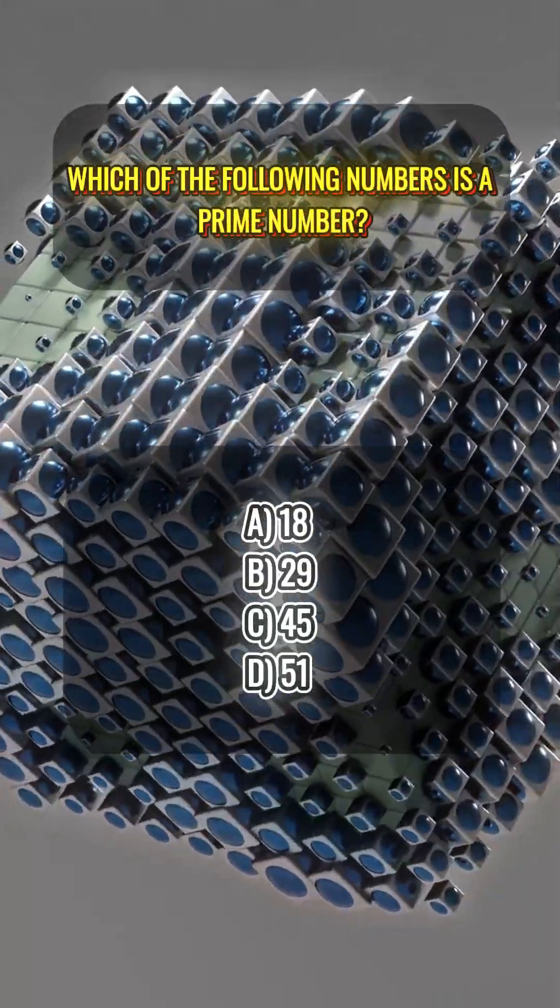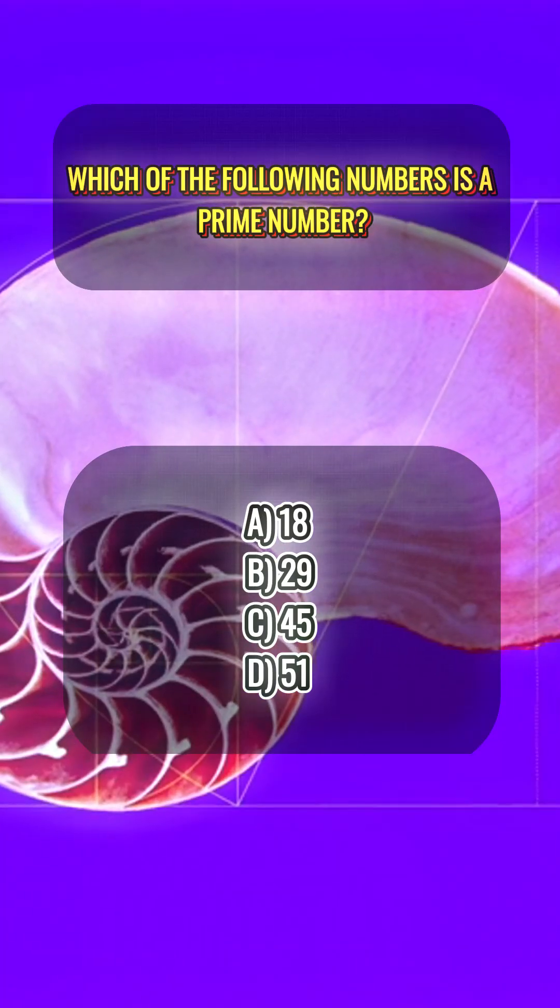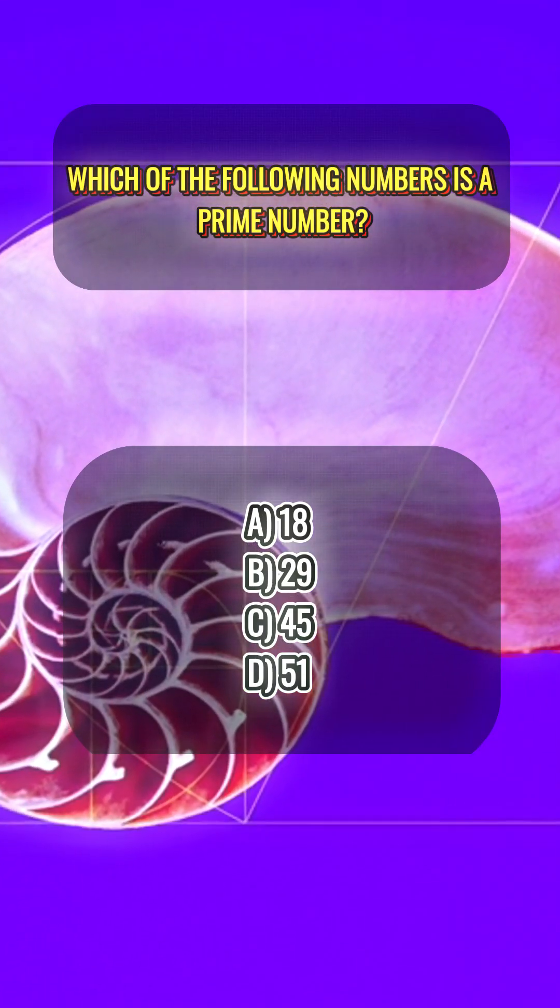Which of the following numbers is a prime number? A, 18. B, 29. C, 45. D, 51.